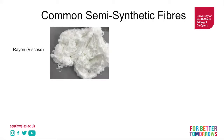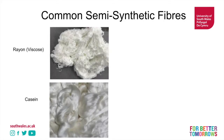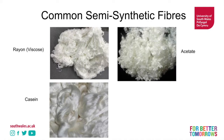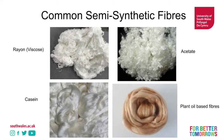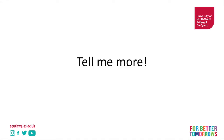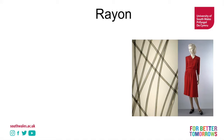Here are some common semi-synthetic fibers. First up we have rayon, often called viscose. Rayon is made from a cellulose base. Then we have casein, which is made from a milk protein base. Then we have acetate, which is also made from a cellulose base. And then there are plant oil-based fibers, which are obviously made from plant oils.